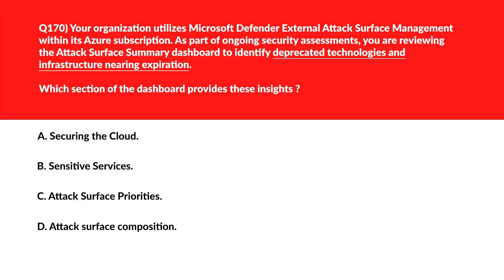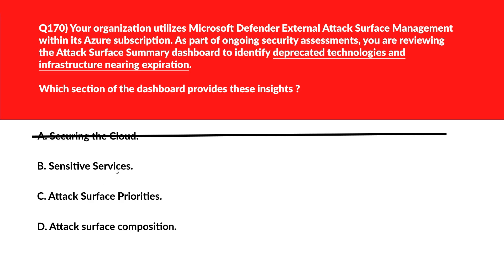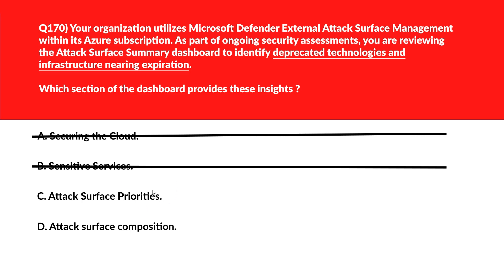Next — testing concepts on deprecated technologies and infrastructure nearing expiration. Option A, Securing the Cloud, focuses on cloud security improvements, not identifying outdated or expiring infrastructure — incorrect. Option B, Sensitive Services, assesses high-risk assets but doesn't provide visibility into deprecated technologies or infrastructure nearing expiration — incorrect. Option C, Attack Surface Priorities, highlights deprecated technologies and infrastructure near expiration — correct.